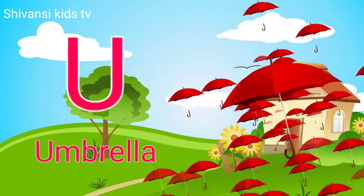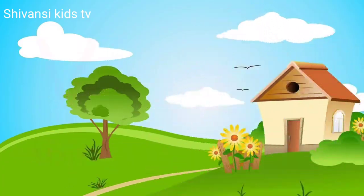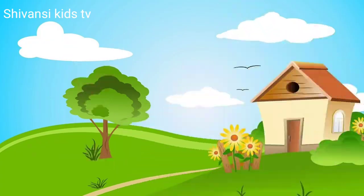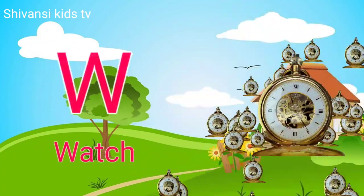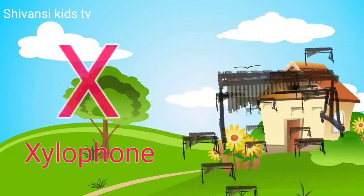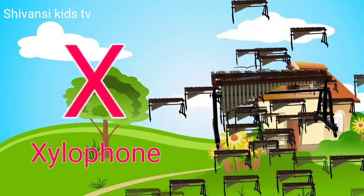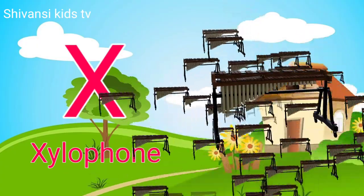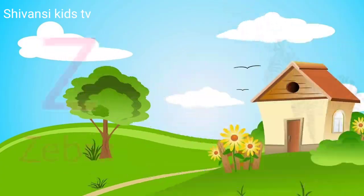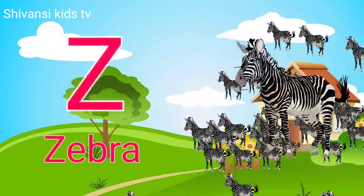U for umbrella, V for van, W for watch, X for xylophone, Y for yard, Z for zebra.